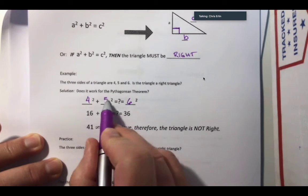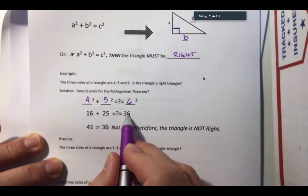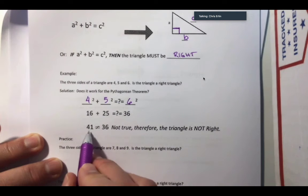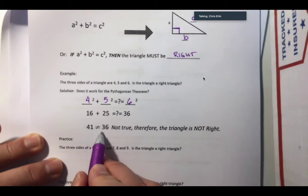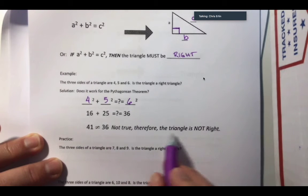4 squared is 16, 5 squared is 25, 6 squared is 36. When I combine these two, I get 41, which is not equal to 36. Therefore, it's not a right triangle.